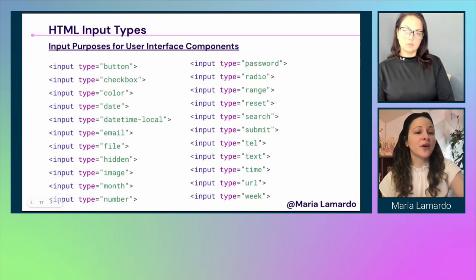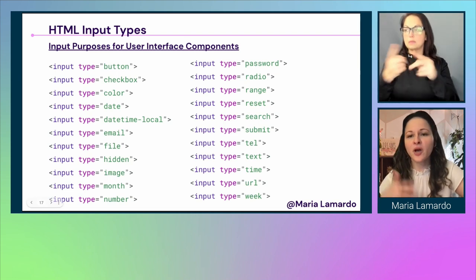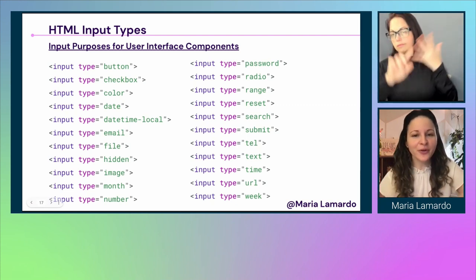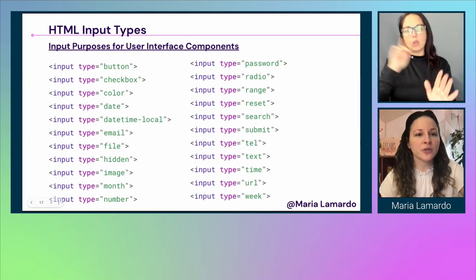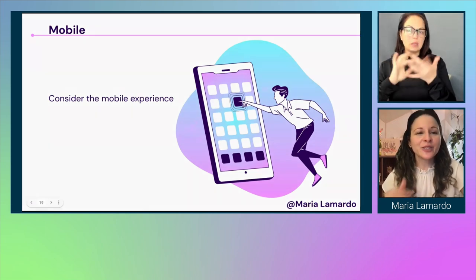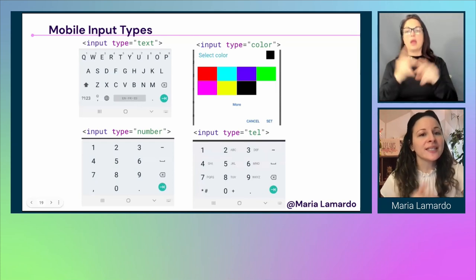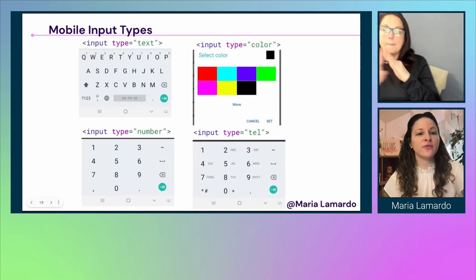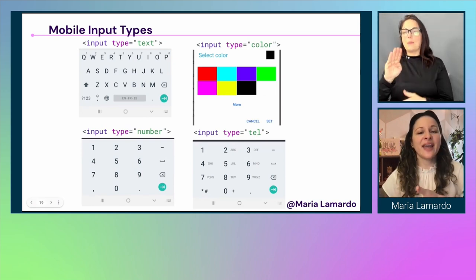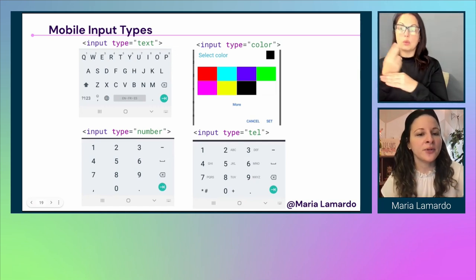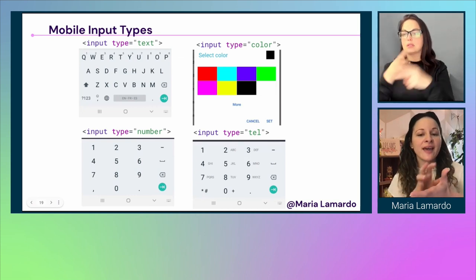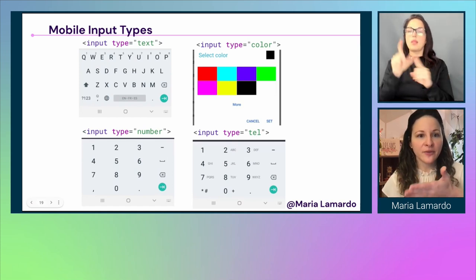There are also many different input types available: checkbox, radio, password, text, email, phone, number, time, and more. One important consideration when selecting input type is the mobile experience — different input types trigger different keyboards on mobile devices. For input type text you get an alphabet keyboard; input type color gives a color picker; input type number gives a number keyboard; and input type tel gives a number keyboard that also includes letters for formatted phone numbers.